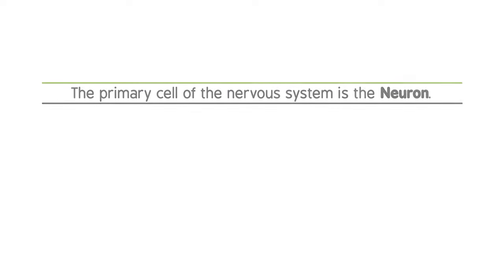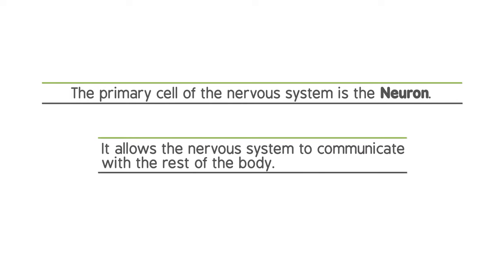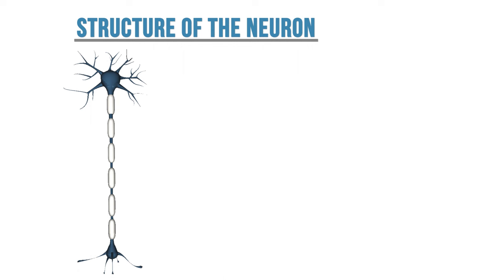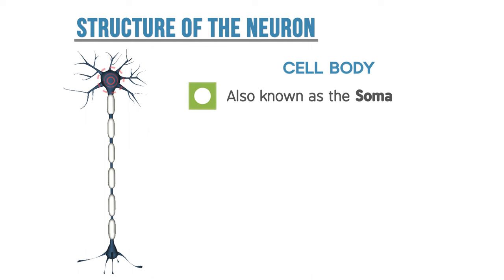The neuron is a very fascinating and vital portion of the nervous system because it allows the nervous system to communicate with the rest of the body. The structure of the neuron offers key features to help it transmit messages across relatively long distances. To begin, the neuron has a cell body, which is also known as a soma, and which houses the cell nucleus.